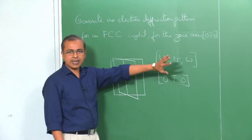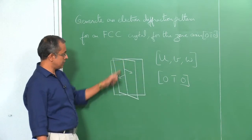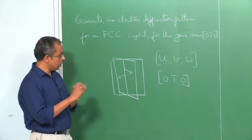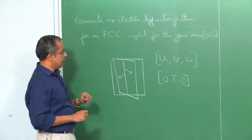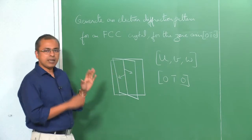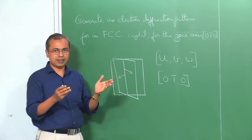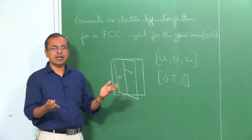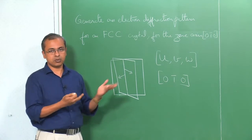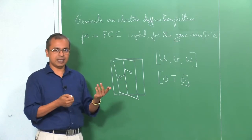Now, why we have picked a zone axis is something we will look at in a moment. What I am going to draw now is a set of points representing points in reciprocal space, and I will also draw the Ewald sphere — in this case it is two-dimensional, so an Ewald circle — which is the condition we have identified as our diffraction condition.